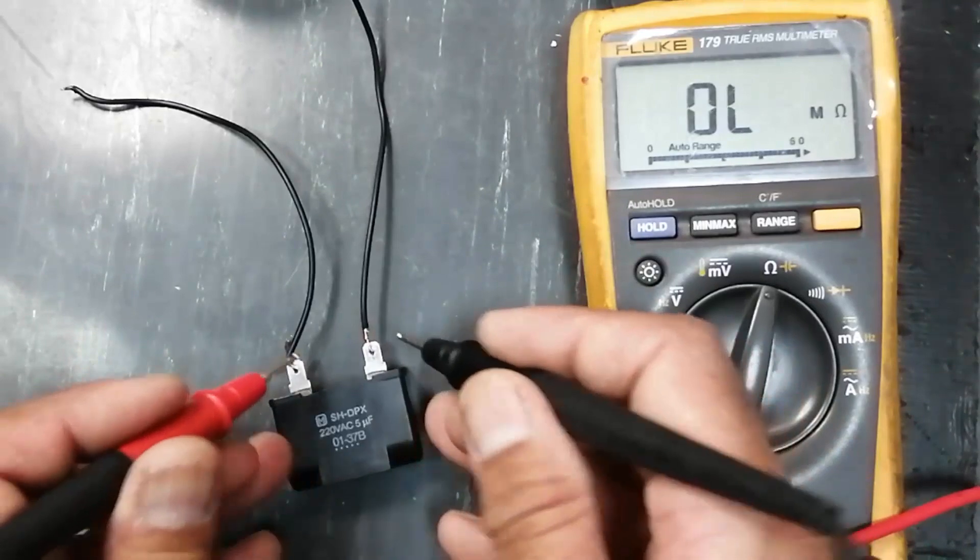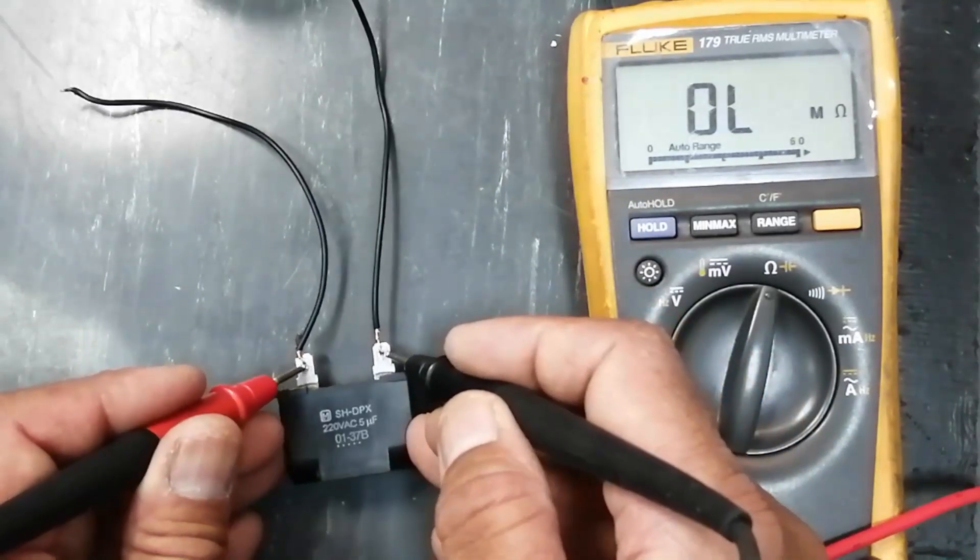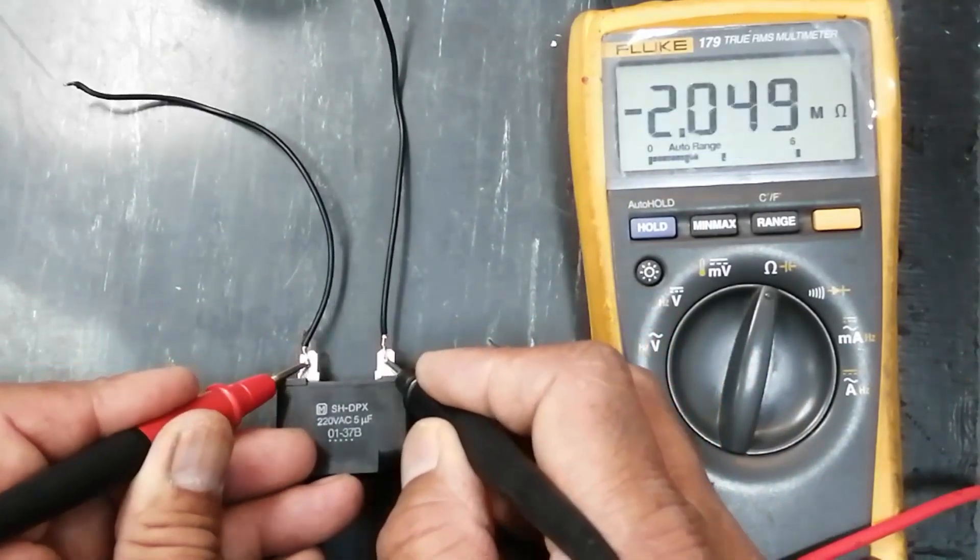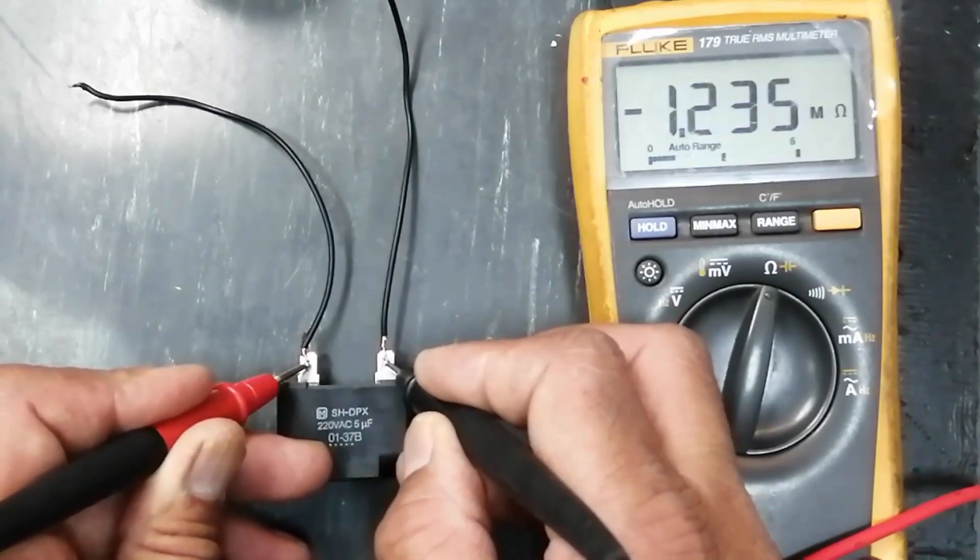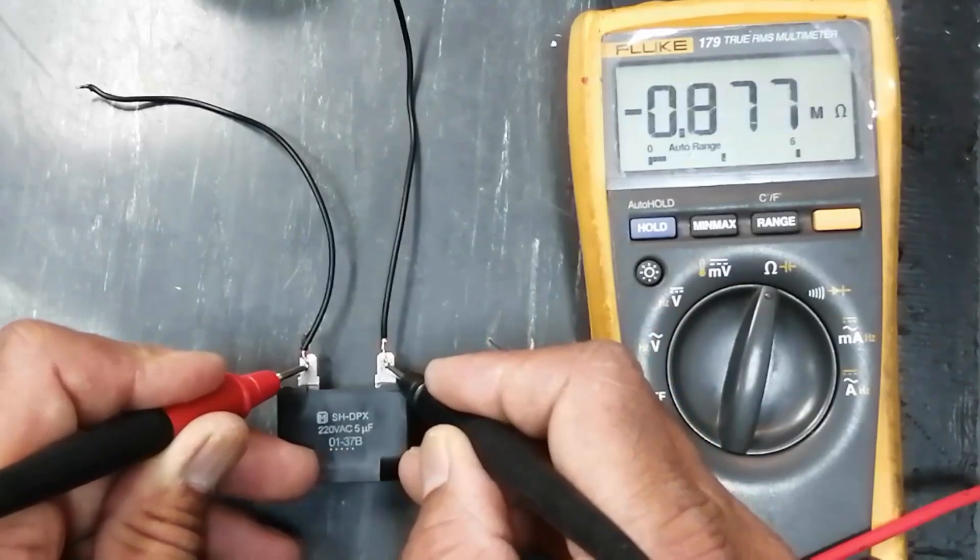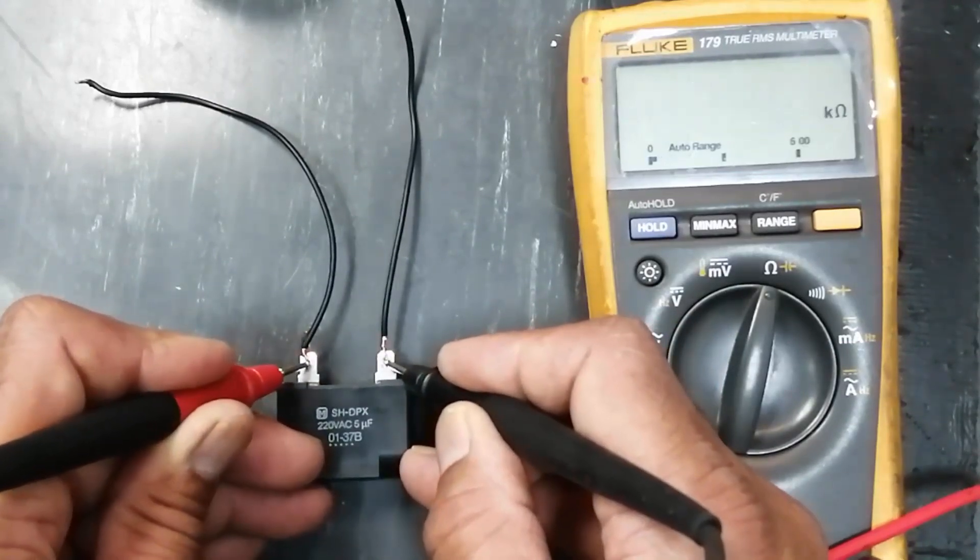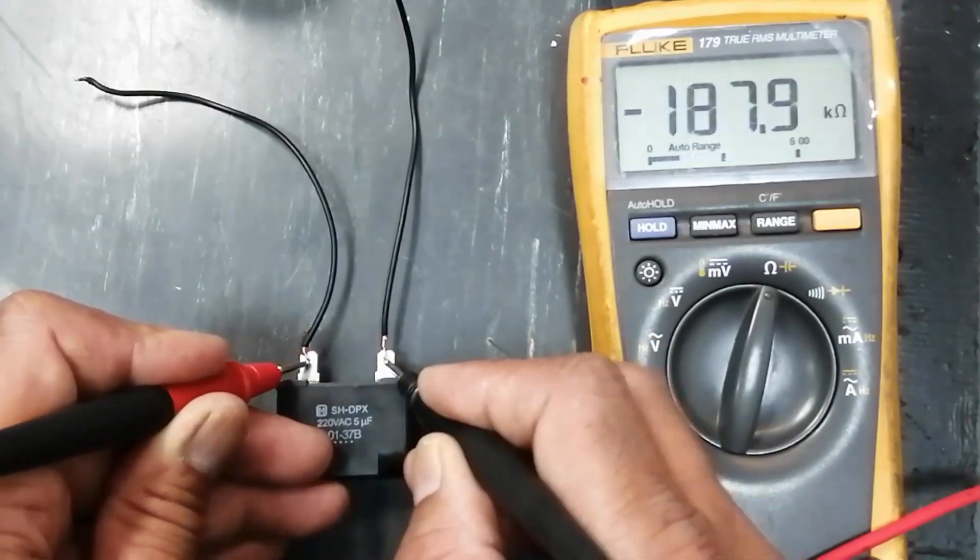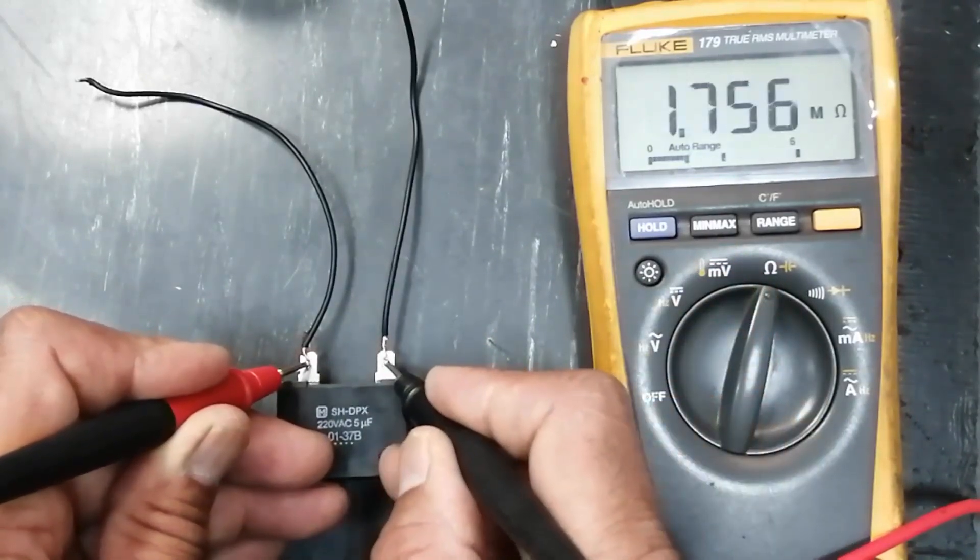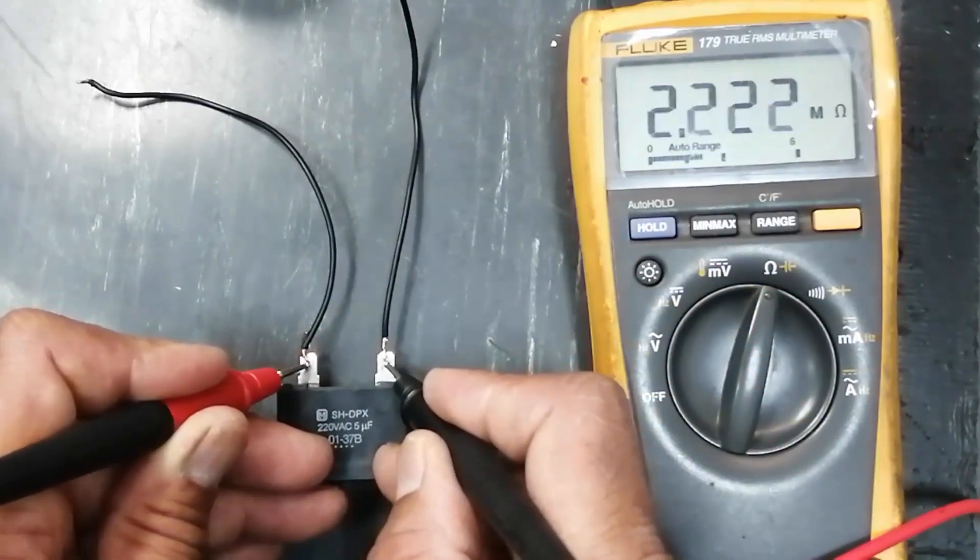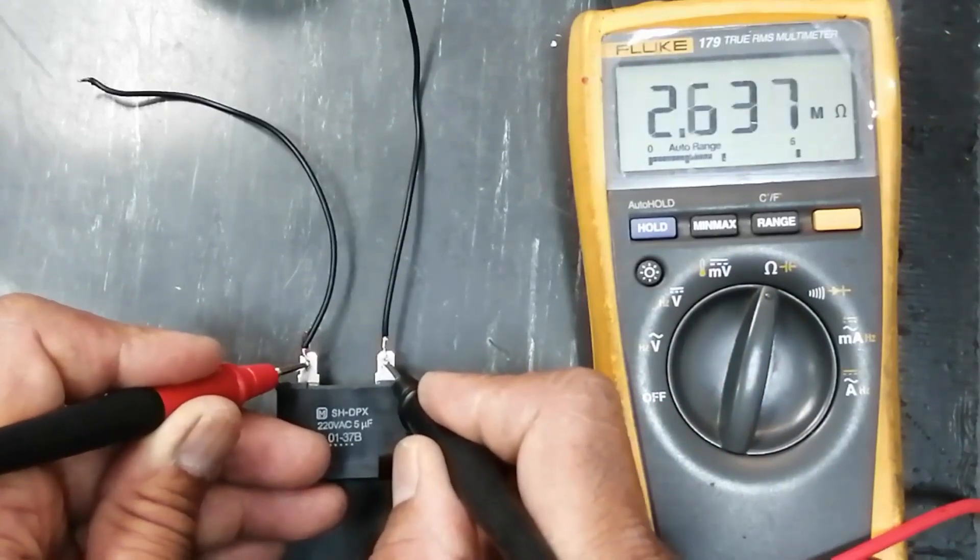Now reverse the polarity. We can see the resistance in negative because there is some voltage on the capacitor. So now when you connect the multimeter in ohms scale, this will charge the capacitor from minimum to maximum resistance.